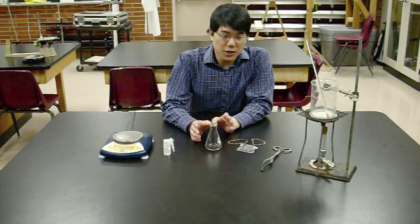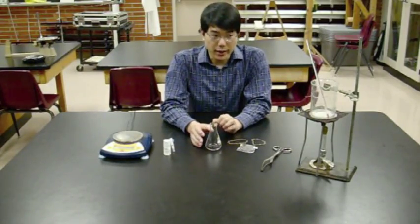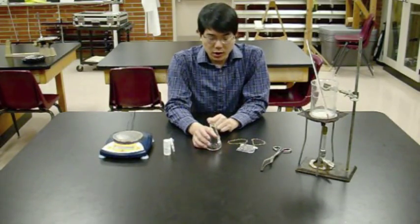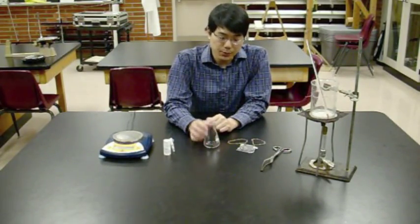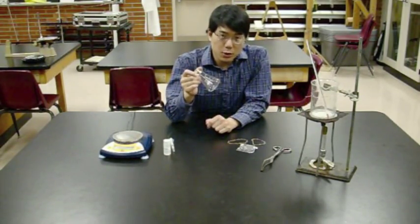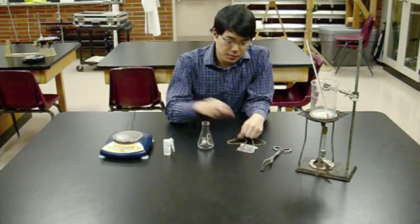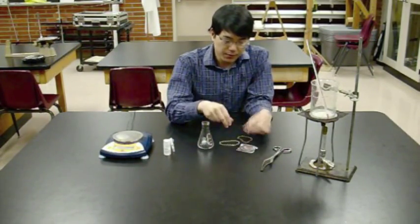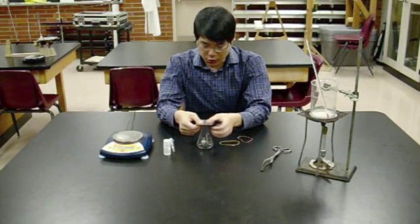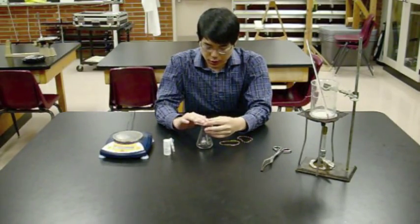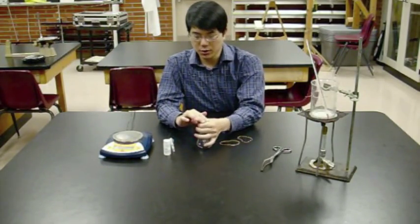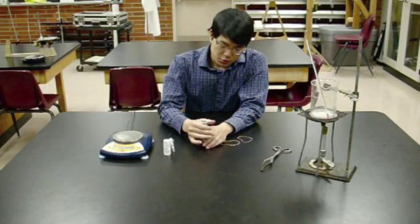By now you should have a water bath going. Now we need to make the Dumas tube from four components: the 125 milliliter Erlenmeyer flask, two rubber bands, and a piece of aluminum foil. Center the aluminum foil over the end of the flask and collapse the edges down to make a form-fitting cap.